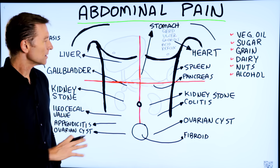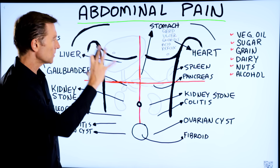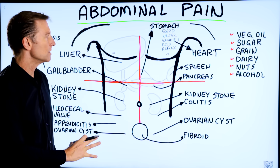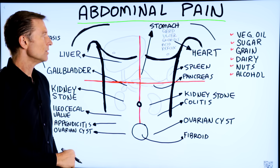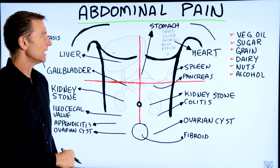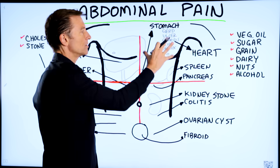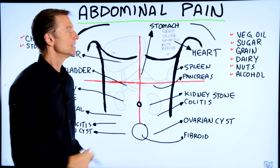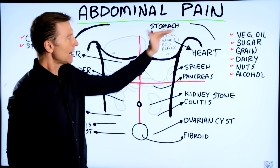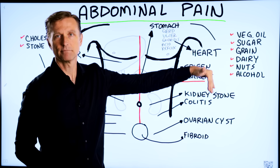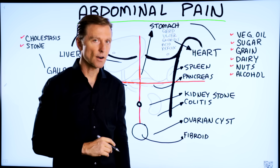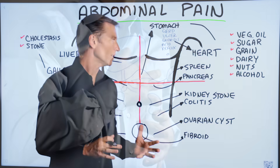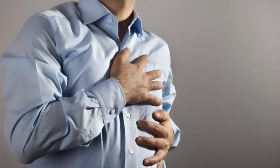I'm going to go through the different organs and what could be wrong. First, if you have pain in your left upper quadrant that's going down your left arm, that potentially could be the heart — it could be a heart attack.